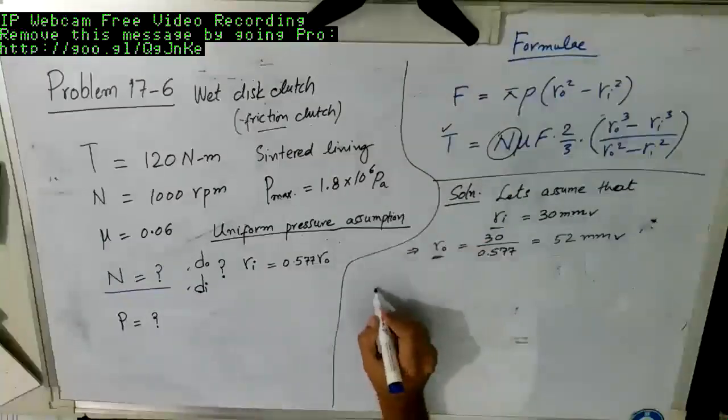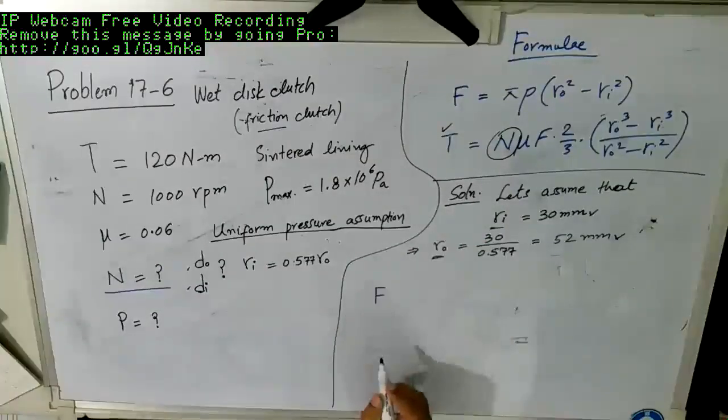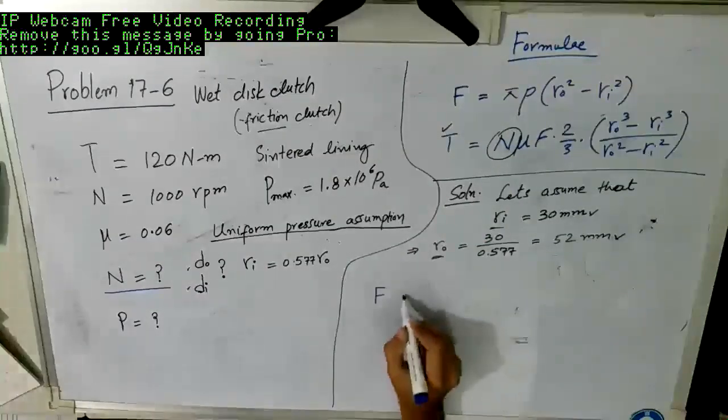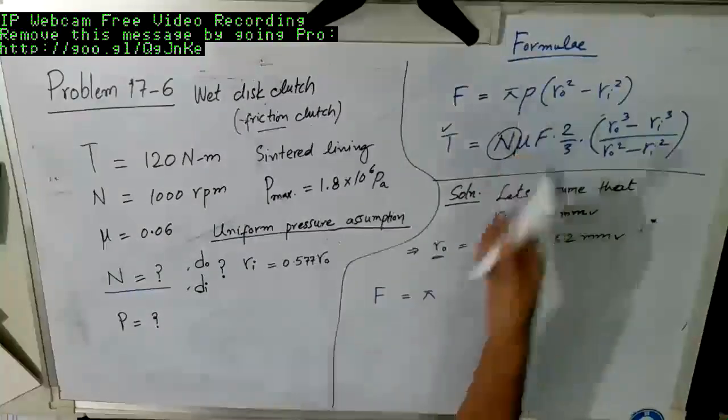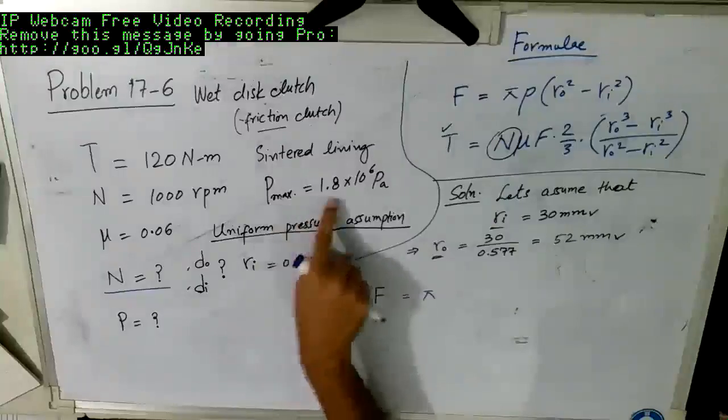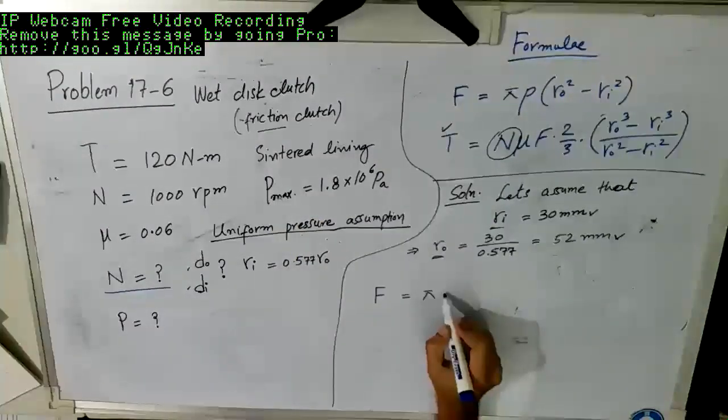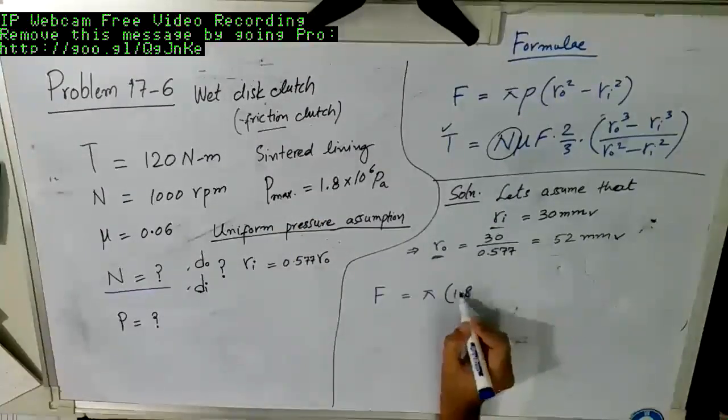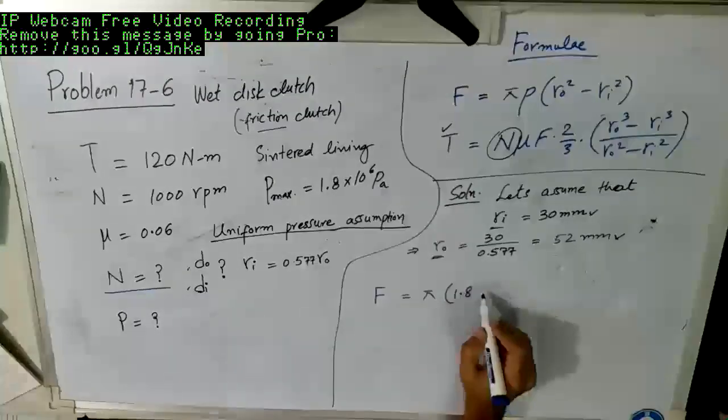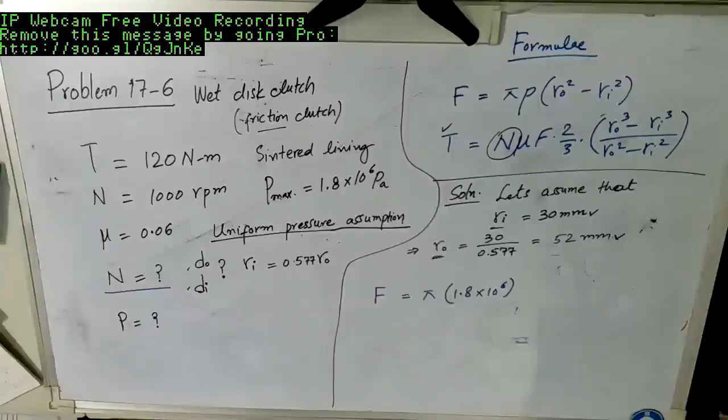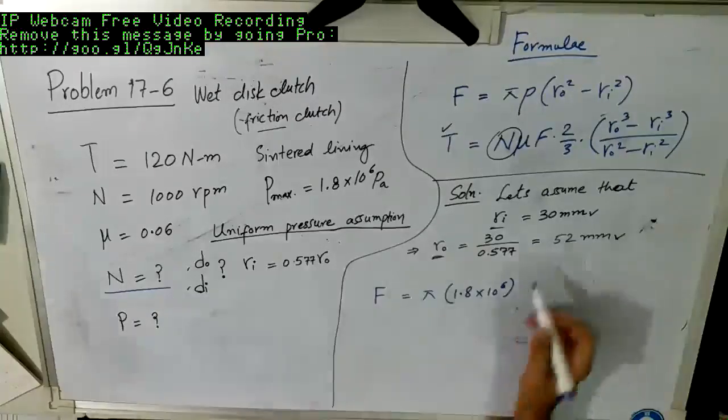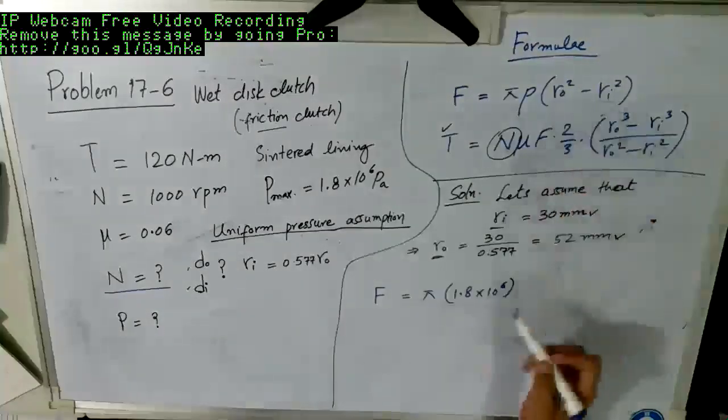Putting these values here in the actuation force formula, we have F is equal to pi, then there is P, so the P is given in the data. This is 1.8 megapascal, so 1.8 into 10 to raise power 6.